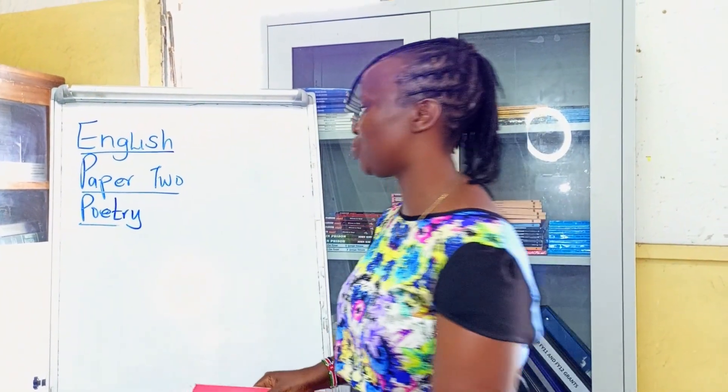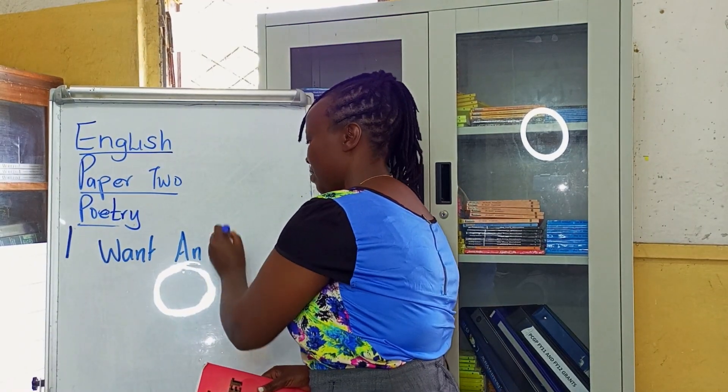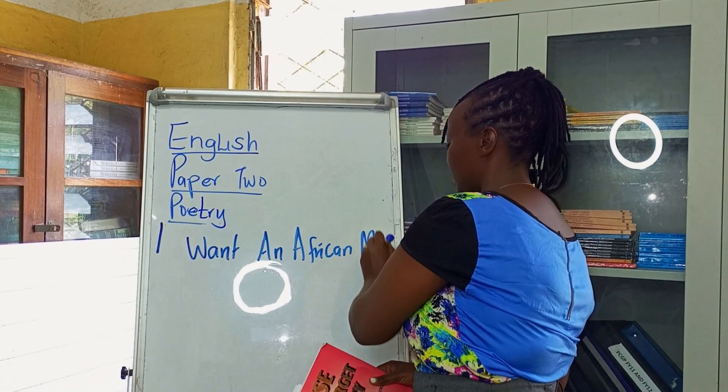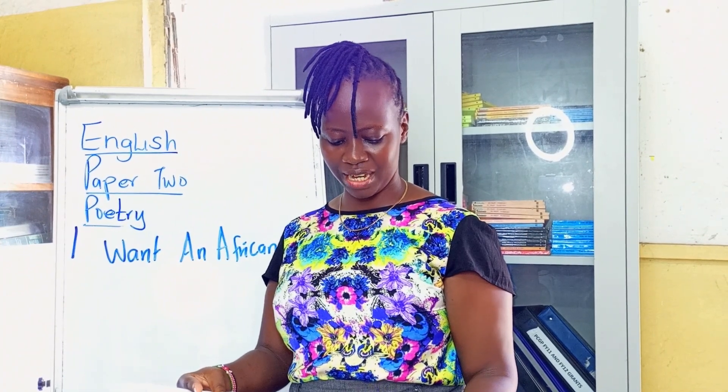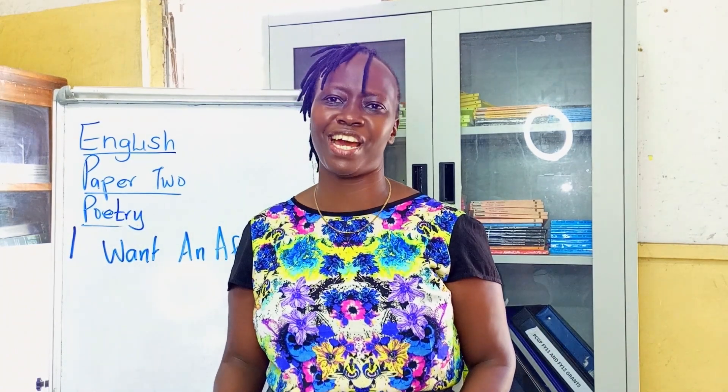I have an interesting poem here that I would like to read for you. It's called 'I Want an African Man.' The poem is by Naliaka Kisaka. I want to read this poem for you — tell me what you think. By the end, tell me whether this person really wants an African man or desperately wants one.